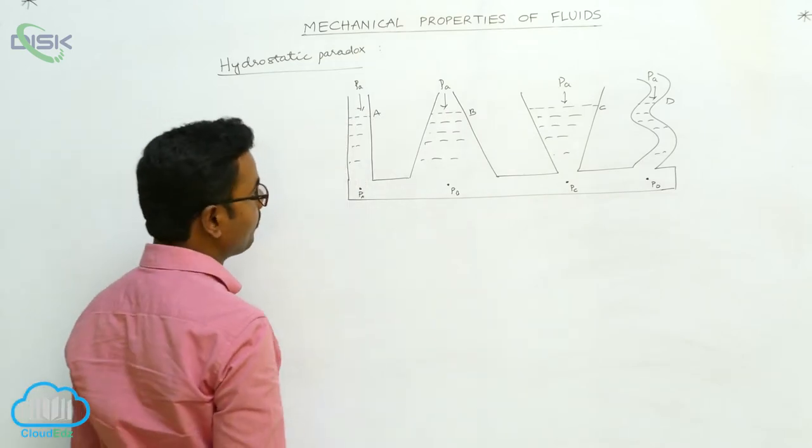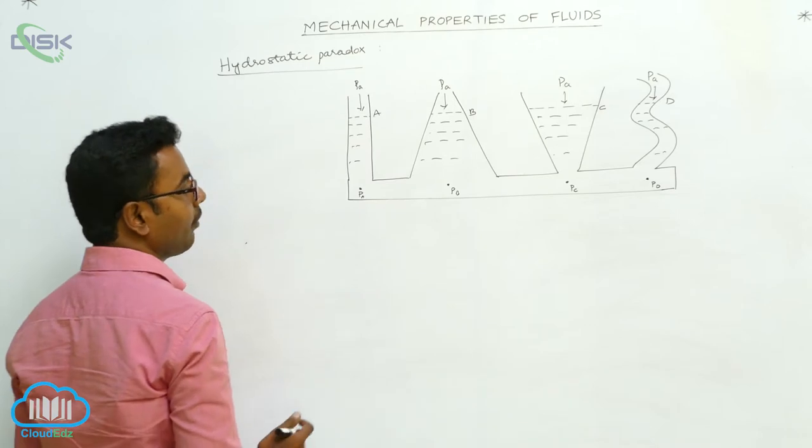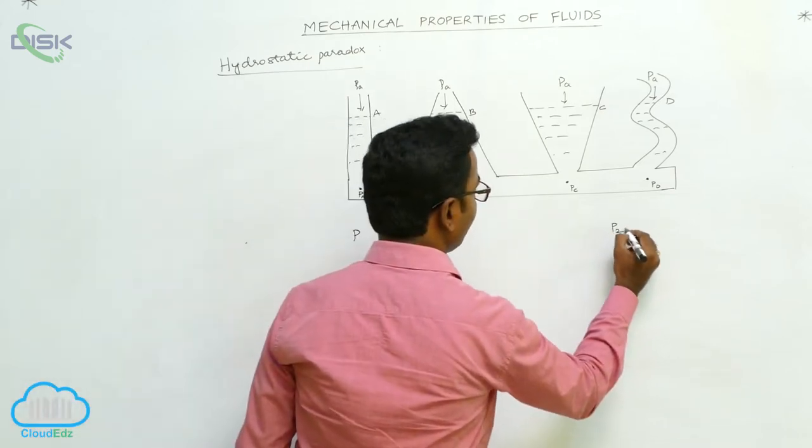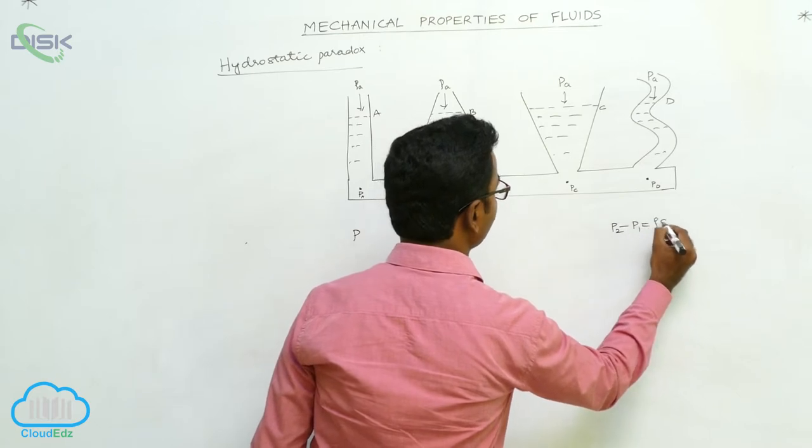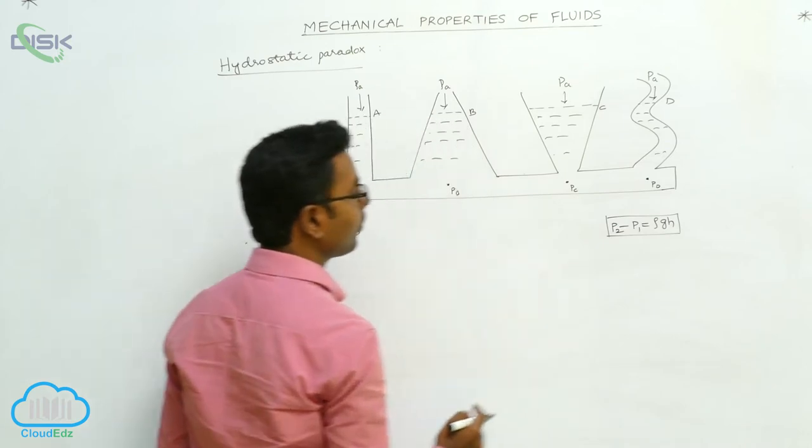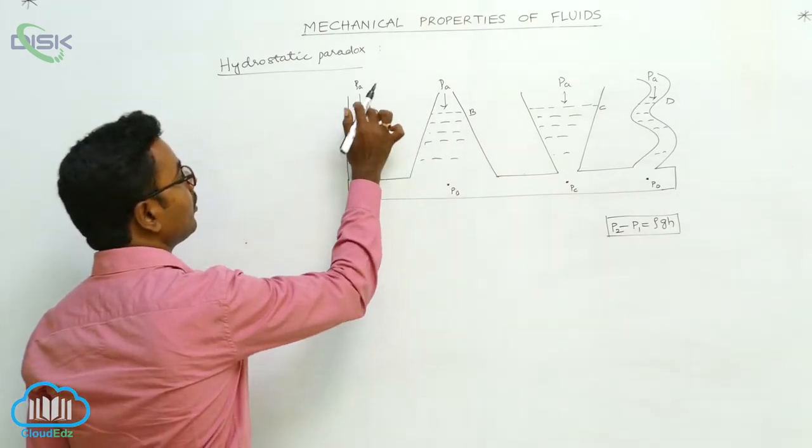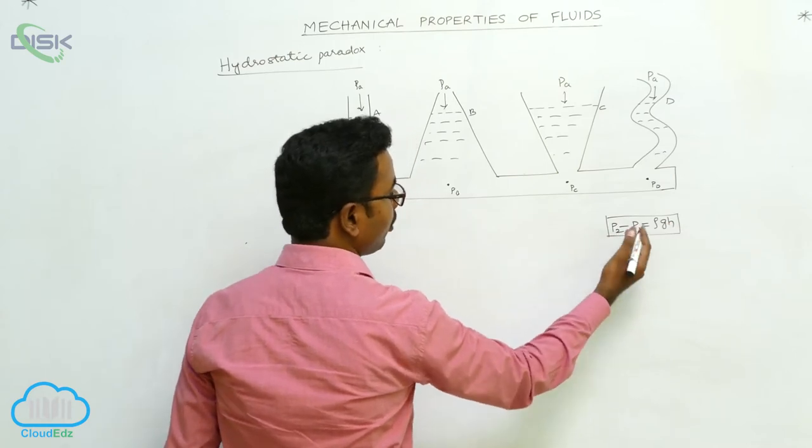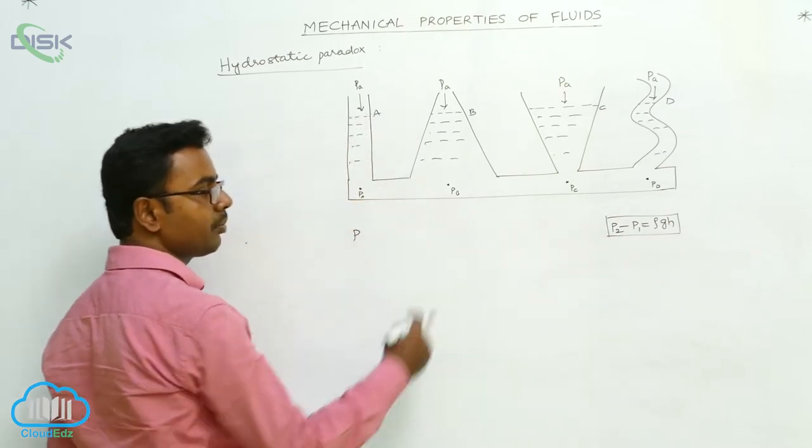If we take container A first, we know the equation P2 minus P1 equals ρgh at a depth H. At depth H, the pressure is given by P2 equals P1 plus ρgh, or the difference P2 minus P1 equals ρgh.